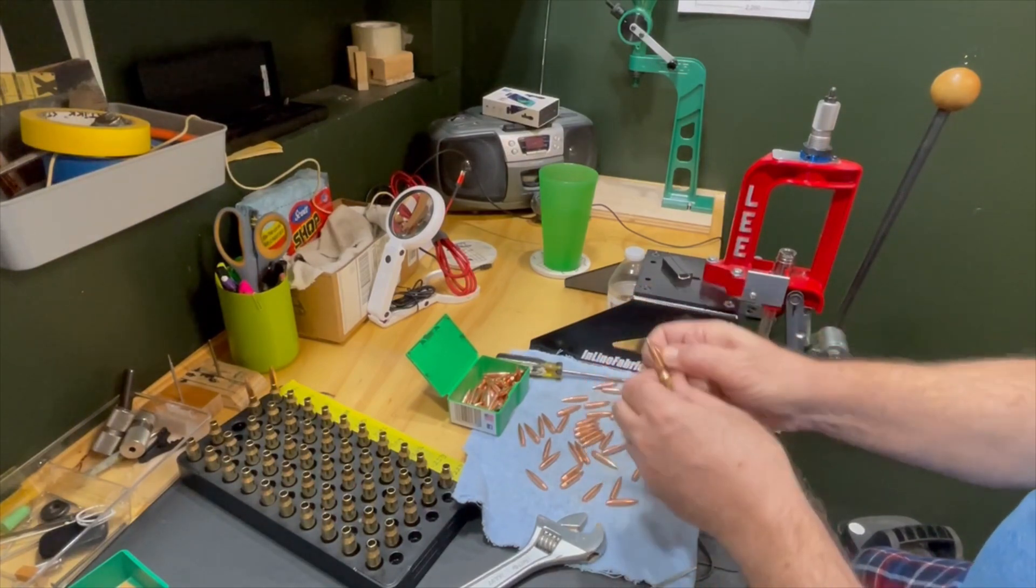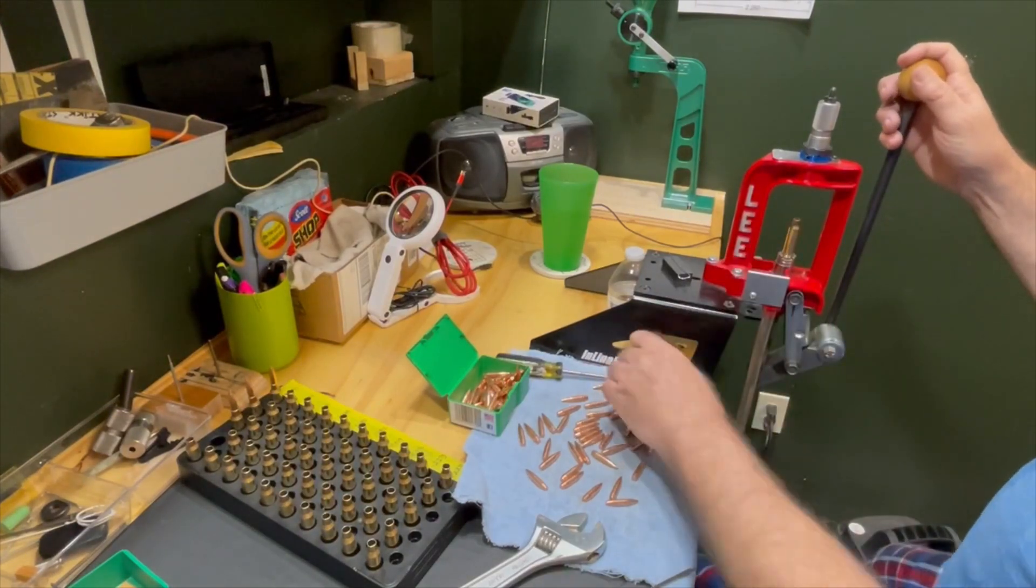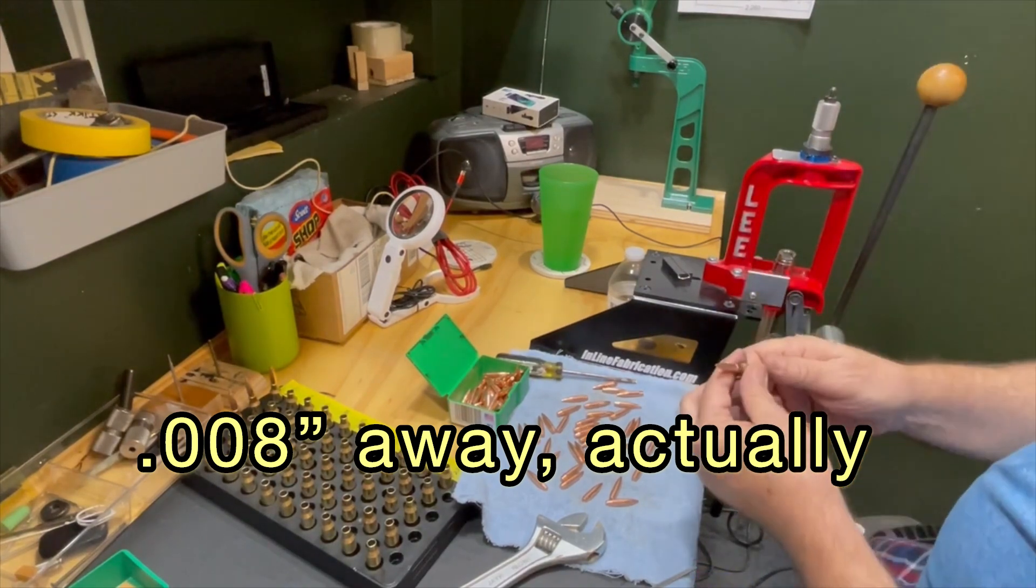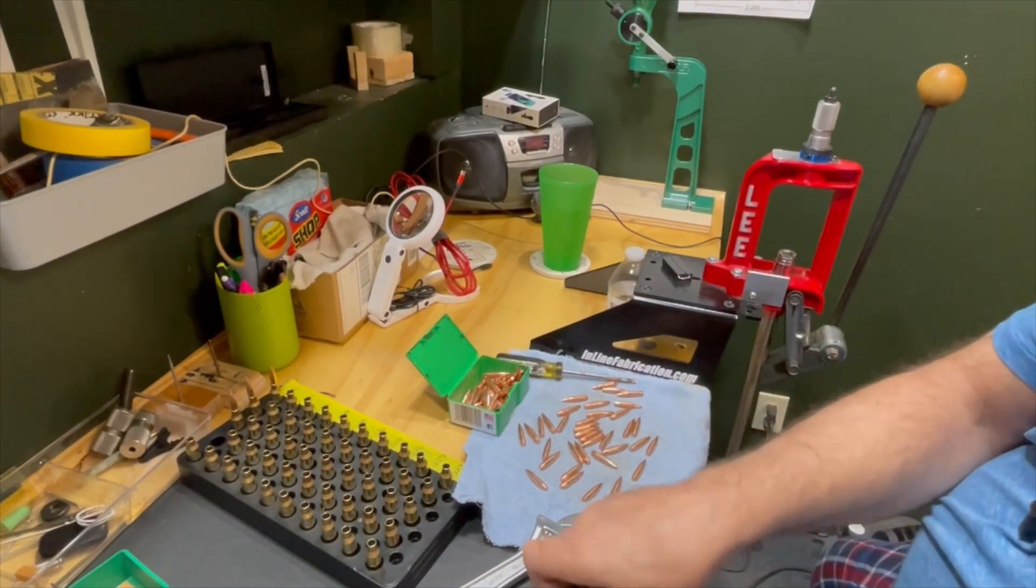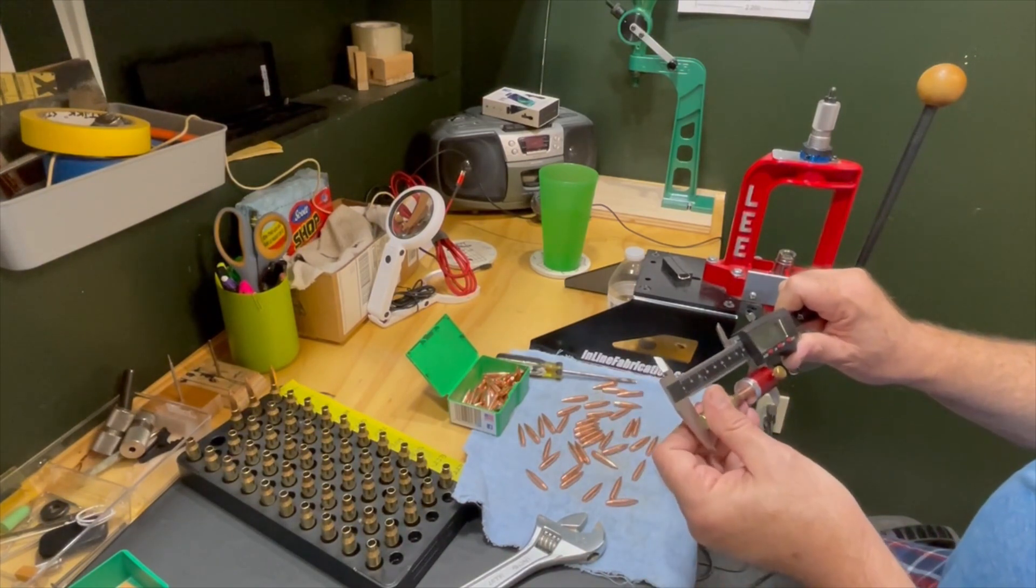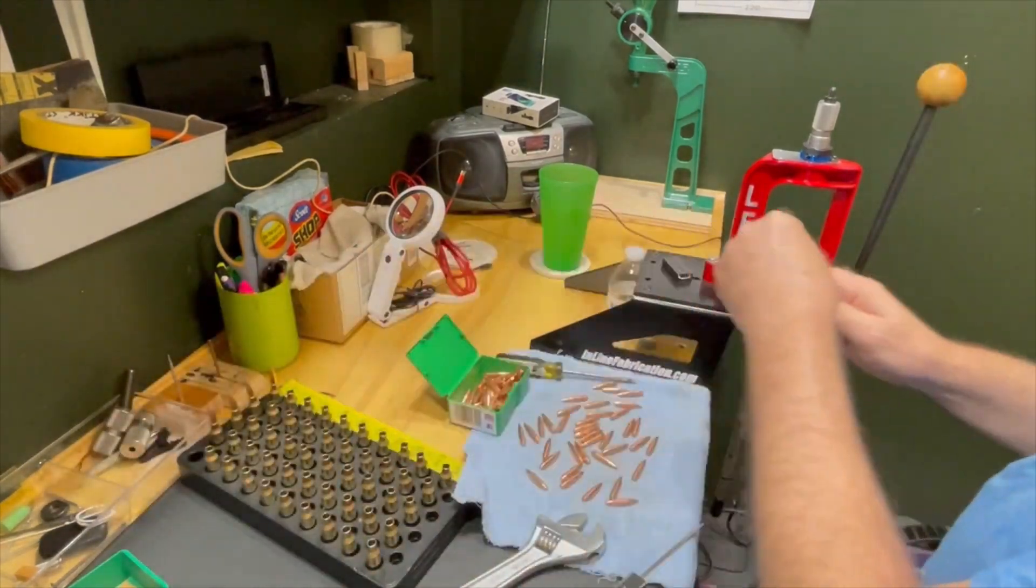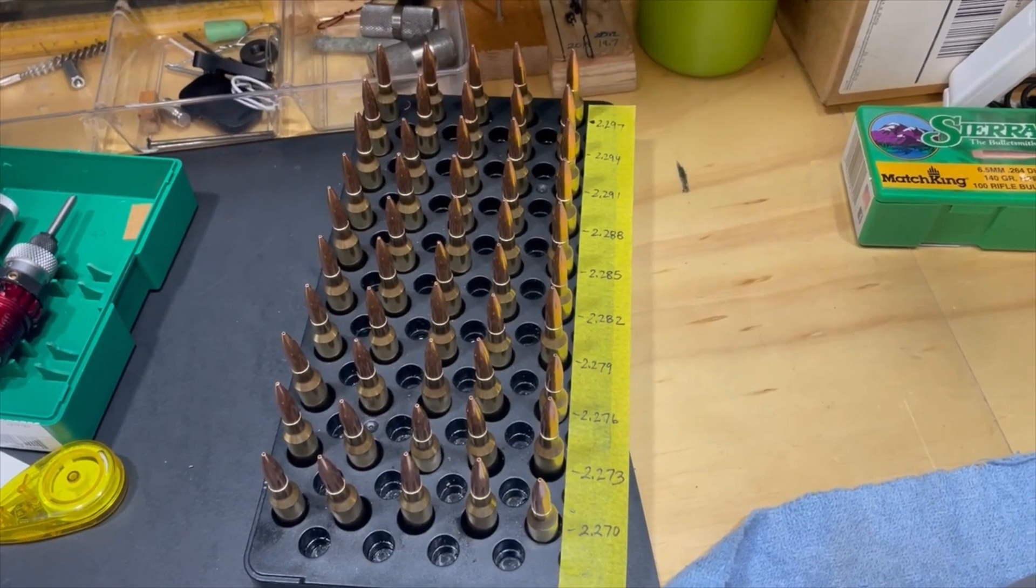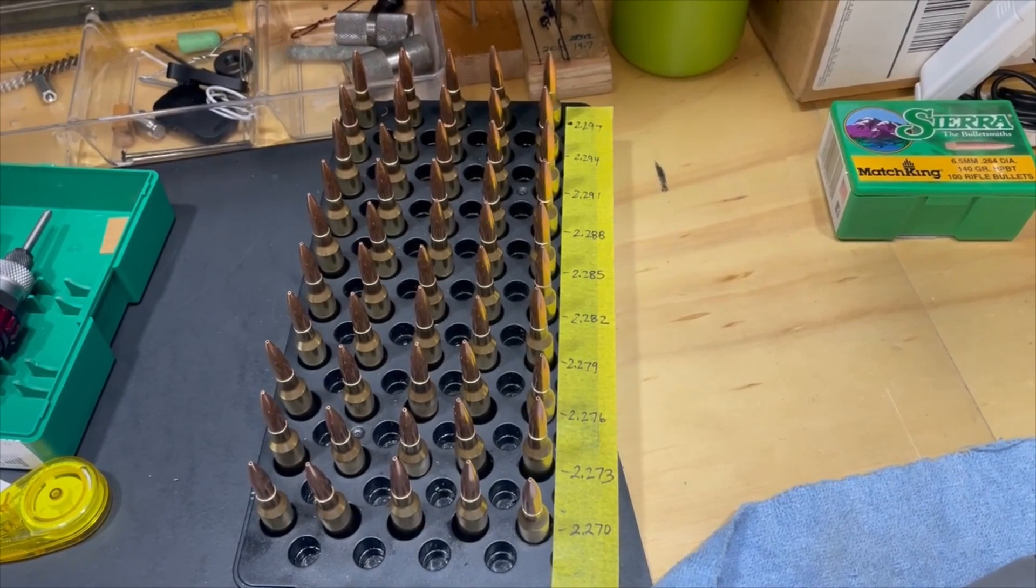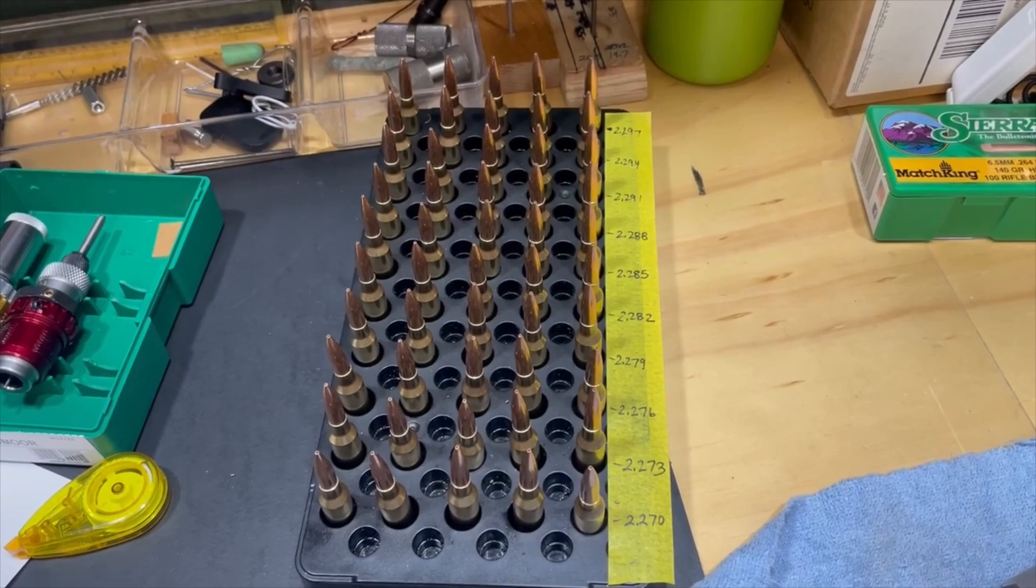Looks like there's enough to get a good grip on it there. But we're just about right up on those lands. 2.2975, still on the money. All right, so we have all 50 rounds loaded to length. We're ready to load those ups, take them to the range, and see which ones are going to perform best.